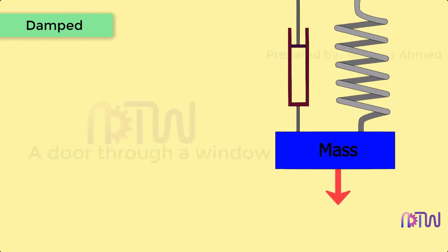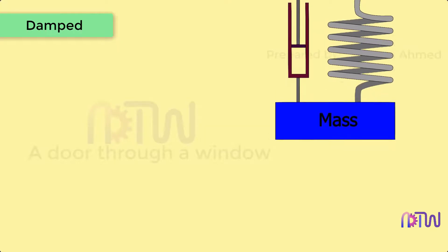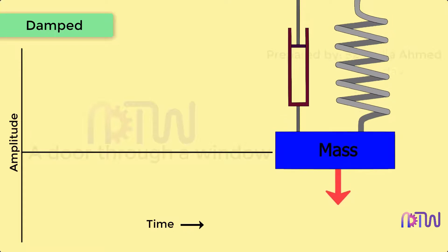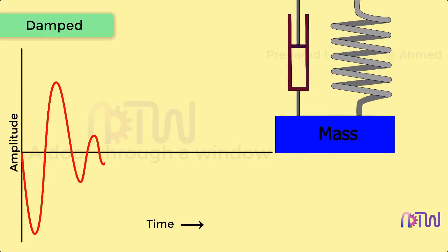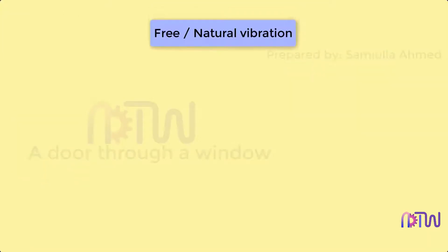Damped vibration: When there is a reduction in amplitude over every cycle of vibration, the motion is said to be damped vibration. It is observed that the amplitude reduces abruptly with respect to time.